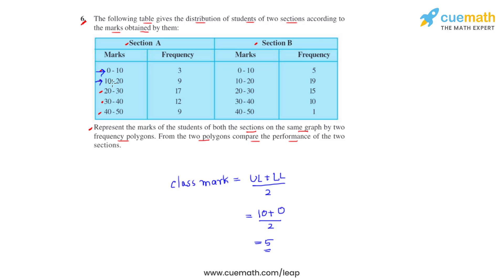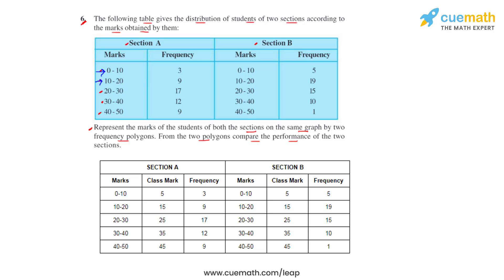Now the table with inclusion of the class marks for all the class intervals is like this. We will have to make the frequency polygon. For that, we take the class marks on the x-axis and the frequency on the y-axis. So let's draw the two frequency polygons for Section A and Section B.